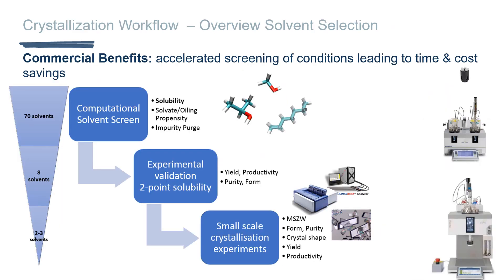At APC we use an in-house platform for early phase solvent selection, solubility assessment, and crystallization design. We leverage in silico computational screening to predict solubility, relative solvate propensity, and impurity purging. This allows us to screen a variety of solvents and solvent classes, carry forward a shortlist for experimental validation through two-point solubility, and then carry out small-scale crystallizations to maximize information gained on the potential solvent system.